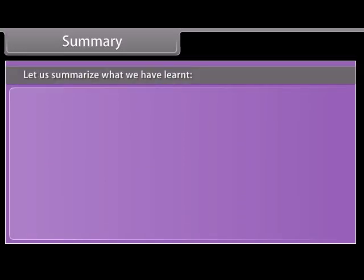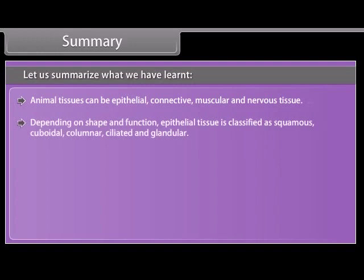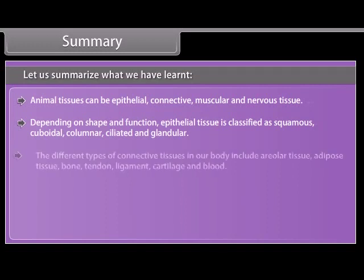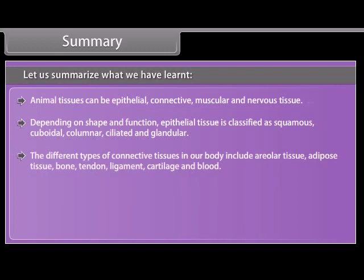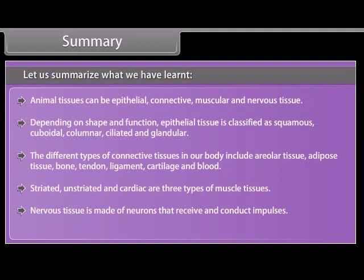Let us summarize what we have learned. Animal tissues can be epithelial, connective, muscular and nervous tissue. Depending on shape and function, epithelial tissue is classified as squamous, cuboidal, columnar, ciliated and glandular. The different types of connective tissues include areolar tissue, adipose tissue, bone, tendon, ligament, cartilage and blood. Striated, unstriated and cardiac are three types of muscle tissues. Nervous tissue is made of neurons that receive and conduct impulses.